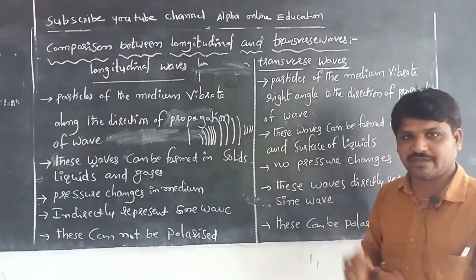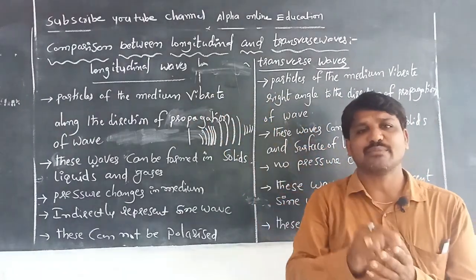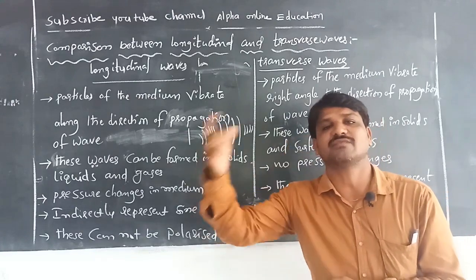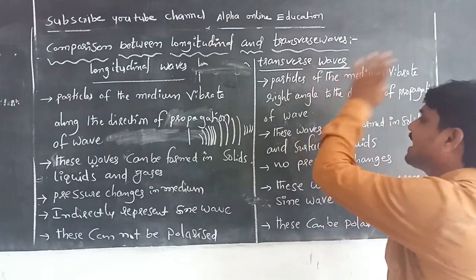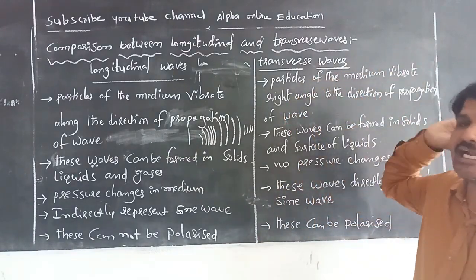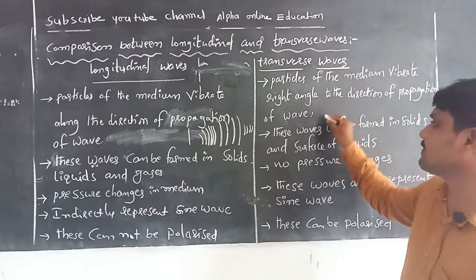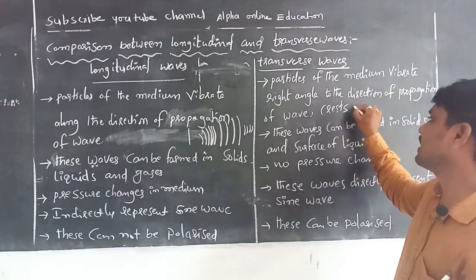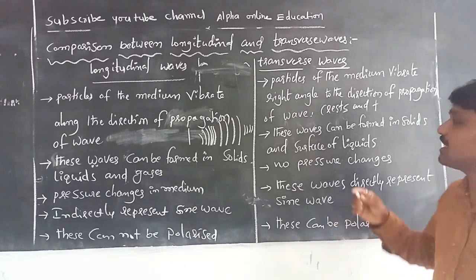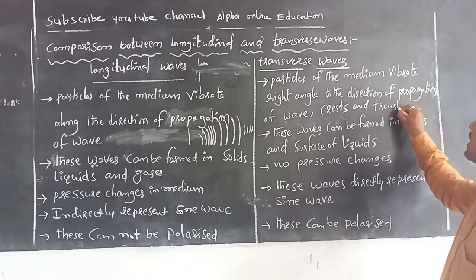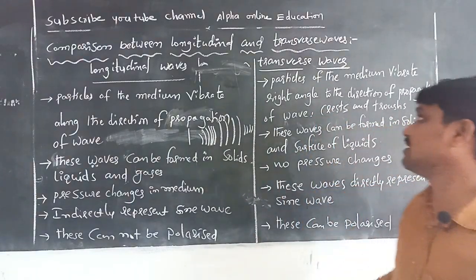Now for transverse waves: in a longitudinal wave, vibrating particles move parallel to the direction of the wave. But in transverse waves, the vibrating particles move perpendicular — at right angles — to the direction of the wave. This is called a transverse wave. In transverse waves, crests and troughs are formed alternatively.